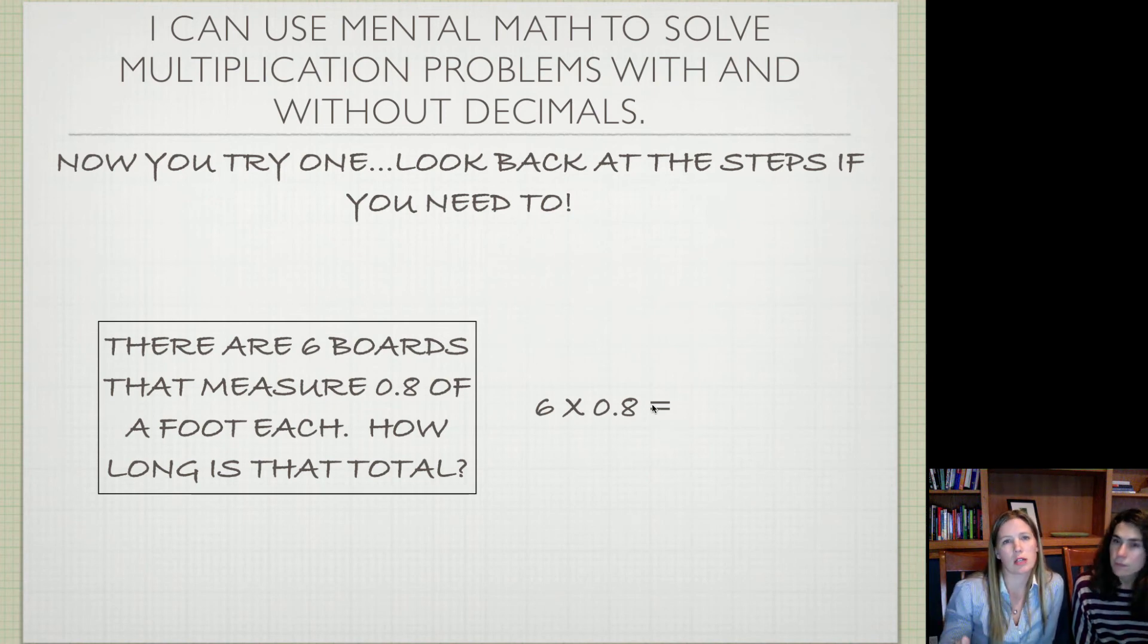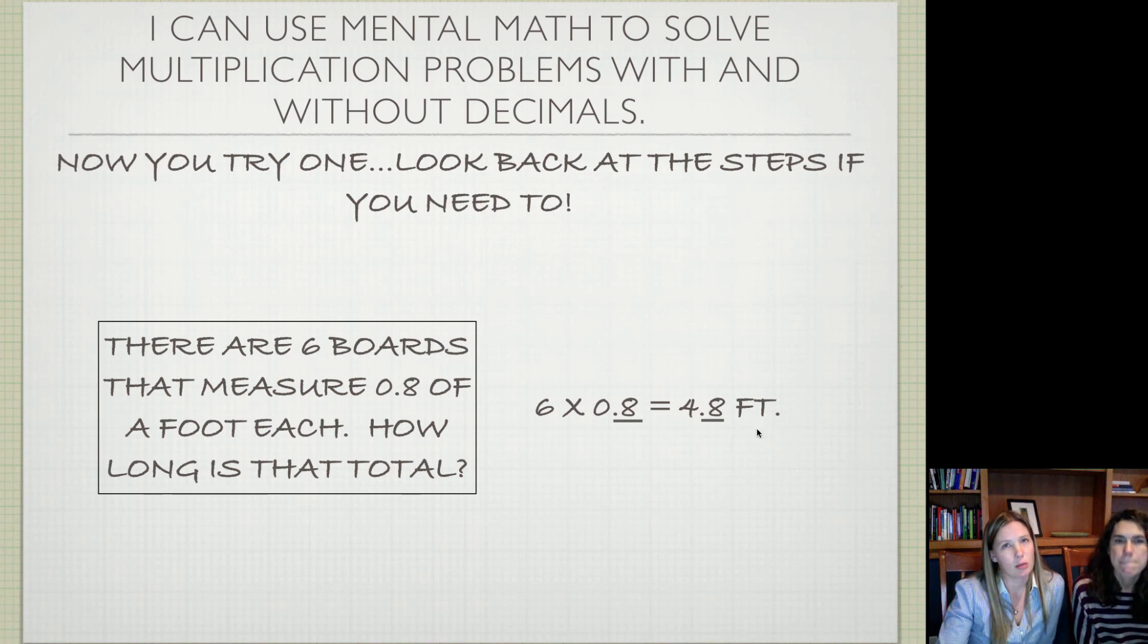If you remember step 1, ignore the decimal. I just have to multiply 6 times 8: 48. Step 2, how many places are after the decimal in my question? 1. Just the 8. 8 tenths. Step 3, make sure I put that many places after the decimal in my answer. You're just going to underline it so you can see it, and then put your decimal in. That's it. You should have gotten 4 and 8 tenths as your answer. Of course, since it's a story problem, you must not leave off the label.